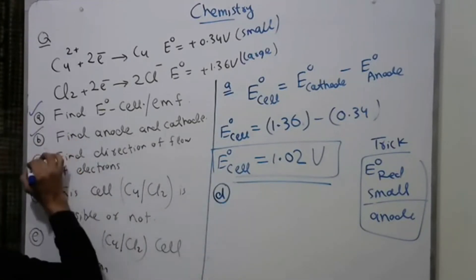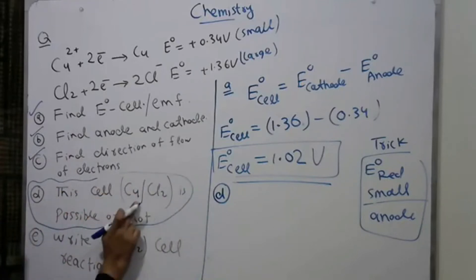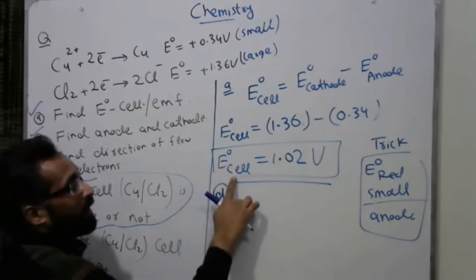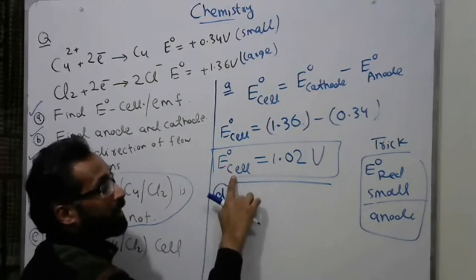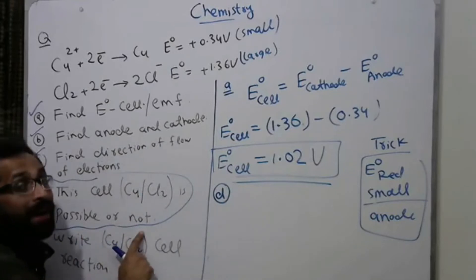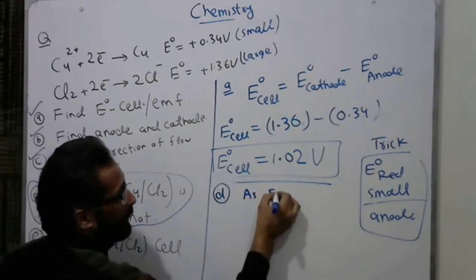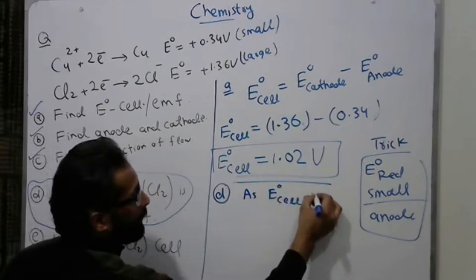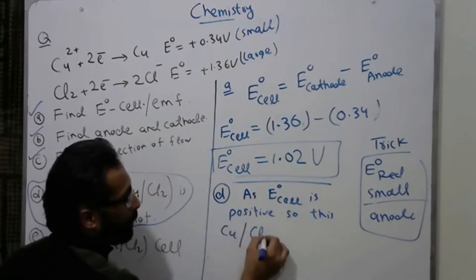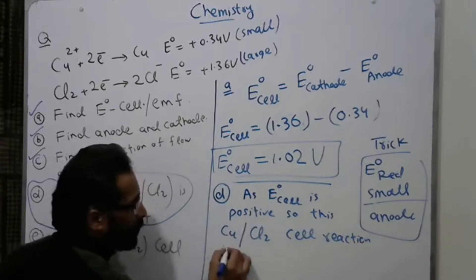Part D: is the copper-chlorine cell reaction possible? The rule is: if E° cell is positive, the cell reaction is possible; if E° cell is negative, it is not possible. Since E° cell = +1.02V, which is positive, the copper-chlorine cell reaction is possible.